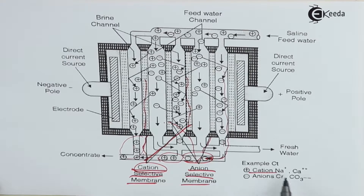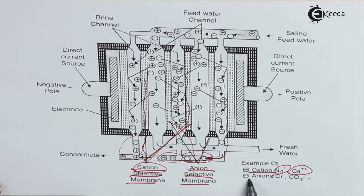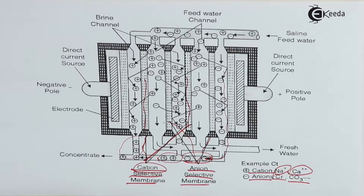The examples given for cations are Na+ (one positive charge) and Ca2+ (two positive charges). For anions, it is Cl- (one negative charge) and CO3 2- (two negative charges). Nitrates such as NO3- carry one minus charge, and hydrogen is H+. All of these impurities present in water can first be dissociated into positive and negative ions, and then those ions can be taken out with the help of semi-permeable membranes.